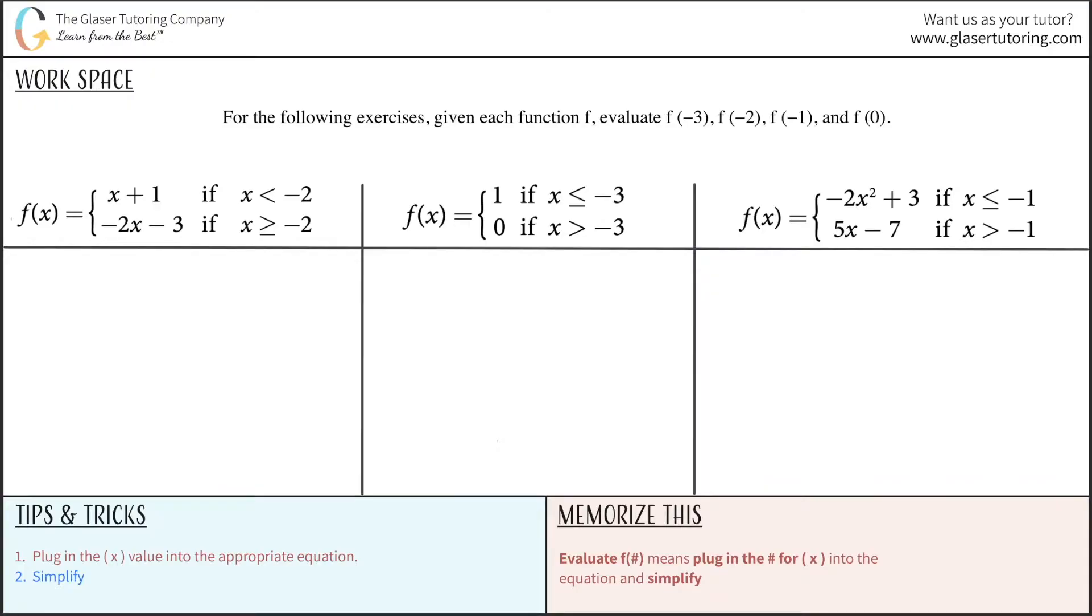So let's take a look at the first one. Here is a piecewise function. All that means is that there are two different equations that govern this overall function at different values of x. So if I want to evaluate f of negative 3, what that means is my x value is really negative 3. And I have to consider which of these two equations should I plug in the value of negative 3 into for x.